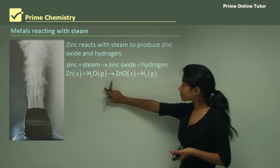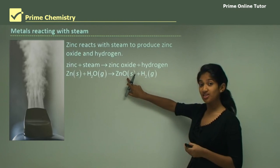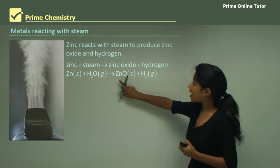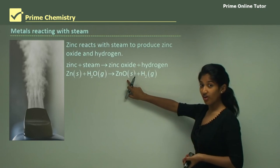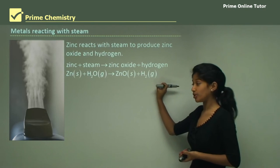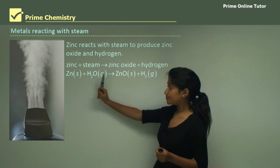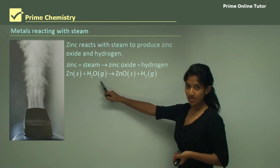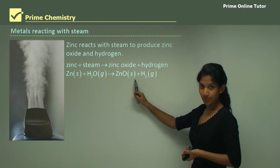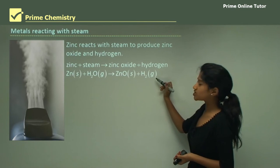The reaction produces zinc oxide. Zinc has a valency of two and oxygen has a valency of minus two, so the valencies cancel out — there are no subscripts and you get ZnO as zinc oxide. Hydrogen gas is produced as H2 because it's a diatomic molecule. Write all states: zinc is solid, steam is gas (indicated as G), zinc oxide is a solid metal oxide, and hydrogen gas is a gas.